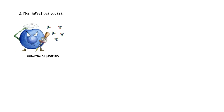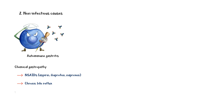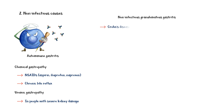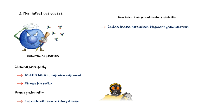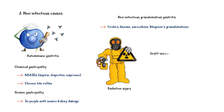Non-infectious causes of chronic gastritis include autoimmune gastritis, where antibodies are formed against a person's own stomach tissue; chemical gastropathy associated with long-term use of non-steroidal anti-inflammatory drugs and chronic bile reflux; uremic gastropathy, which occurs in people with severe kidney damage; non-infectious granulomatous gastritis associated with conditions such as Crohn's disease, sarcoidosis, and Wegener's granulomatosis; long-term exposure to radiation; graft versus host disease; and chronic ischemia to the stomach.